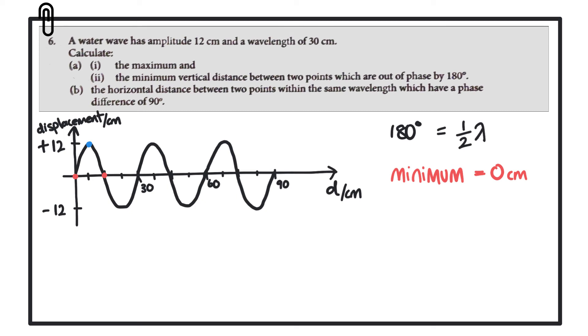Now, half a wavelength later from that will actually take us to the trough which is 12 centimeters below the rest position. So the difference between those two points will be 24 centimeters, and that actually gives us the maximum value.